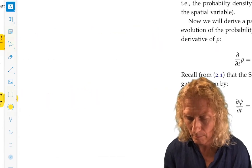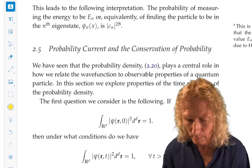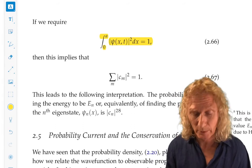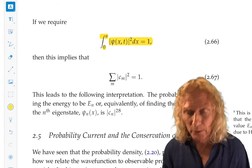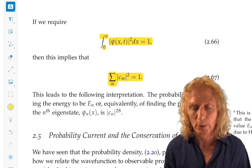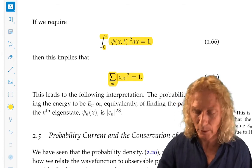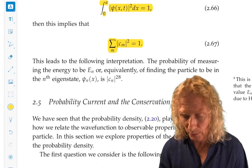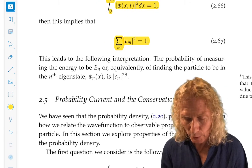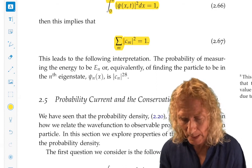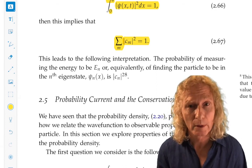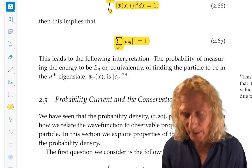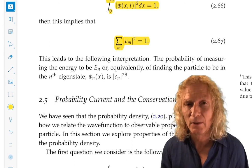And if we require normalization, which we always do, the sum of the squares of the amplitudes, for a general solution, go back and look at this closely, I have the amplitudes, I know I'm going quickly, leads to the following interpretation, and this is very important. The probability of measuring the energy to be En, or equivalently, of finding the particle to be in the nth eigenstate, psi n of x, is cn squared.